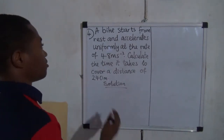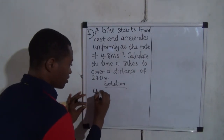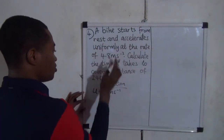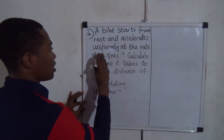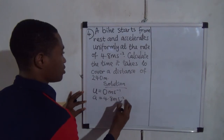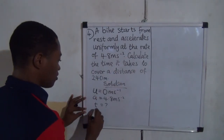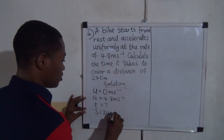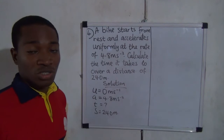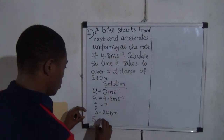Okay, let's write out the parameters we have. The bike starts from rest, so the initial velocity u equals zero meters per second. It accelerates uniformly at 4.8 meters per second squared, so acceleration a equals 4.8 m/s². We need to calculate the time t, which is unknown, to cover a distance s of 240 meters. With u, a, t, and s, we use the second equation of rectilinear motion: s = ut + ½at².